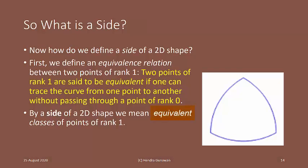Now, how do we define a side of a 2D shape? First, we define an equivalence relation between two points of rank 1. Two points of rank 1 are said to be equivalent if one can trace the curve from one point to another without passing through a point of rank 0.